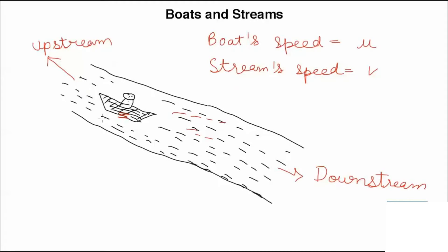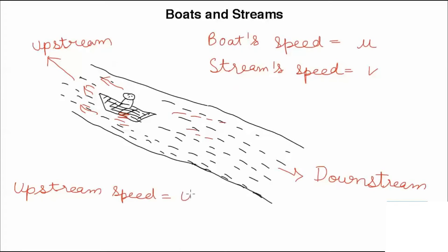Now if a person is going against the speed of the stream, we need to deduct the speed of stream from the boat speed. So the upstream speed is equal to U minus V.